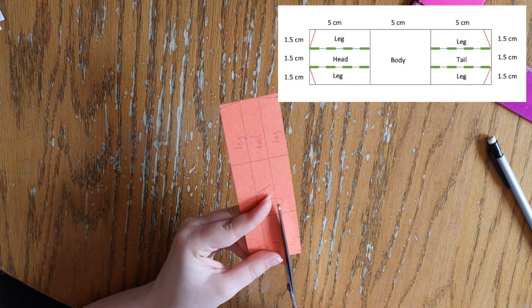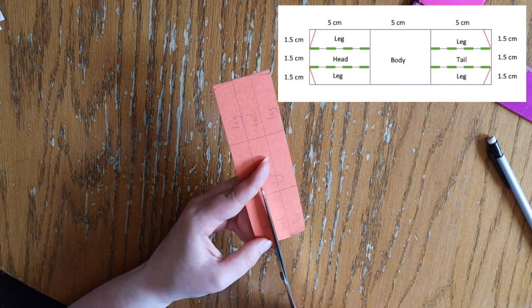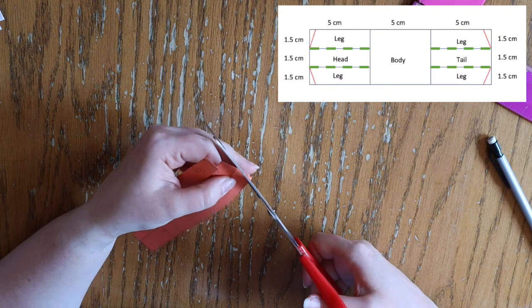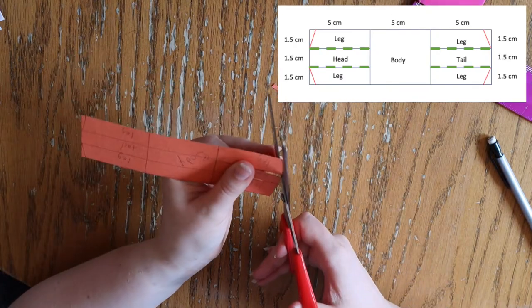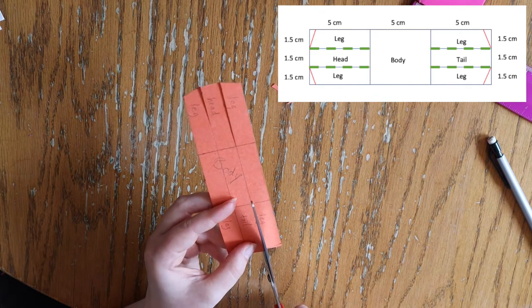Now you can cut off the slanted lines on the legs as well as cut along the portions of your horse that correspond to the green dashed lines as indicated by the diagram on the screen. These incisions will make it so that the legs, tail, and head are able to be bent away from the body.